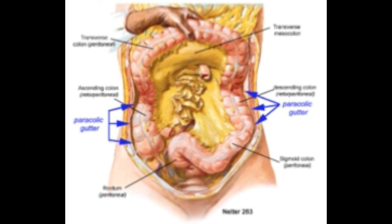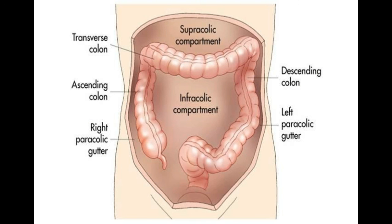These gutters are sometimes confused with another set of recesses called the left and right paracenteric gutters, which together make up the four main open spaces in the abdomen. Paracenteric gutters are located between the colon and the mesentery, which is the part of the peritoneum that supports the internal organs. The paracenteric gutters also function to drain fluid away.